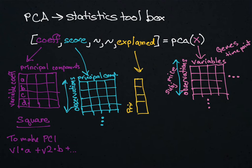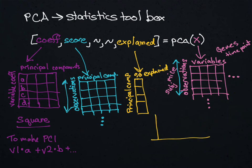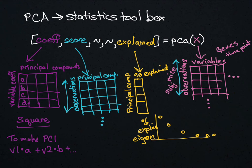Finally there's the explained variable, which is formatted differently. The principal components are the rows instead of the columns, and there's a single column containing the percent explained. This is how you create the scree plot — in some softwares this corresponds to the eigenvalues. This is where you create the plot that says principal components 1 through 3 are important and everything after that is not important, and so on.